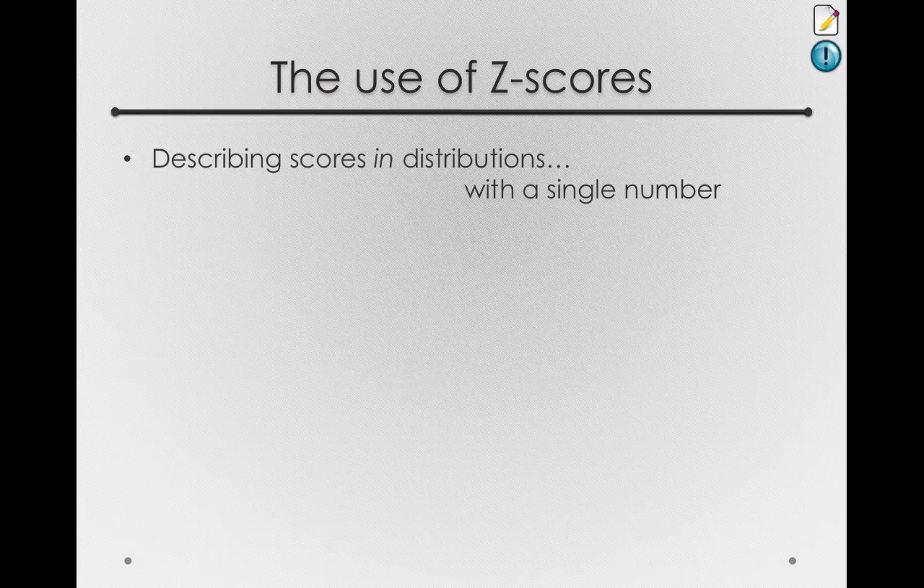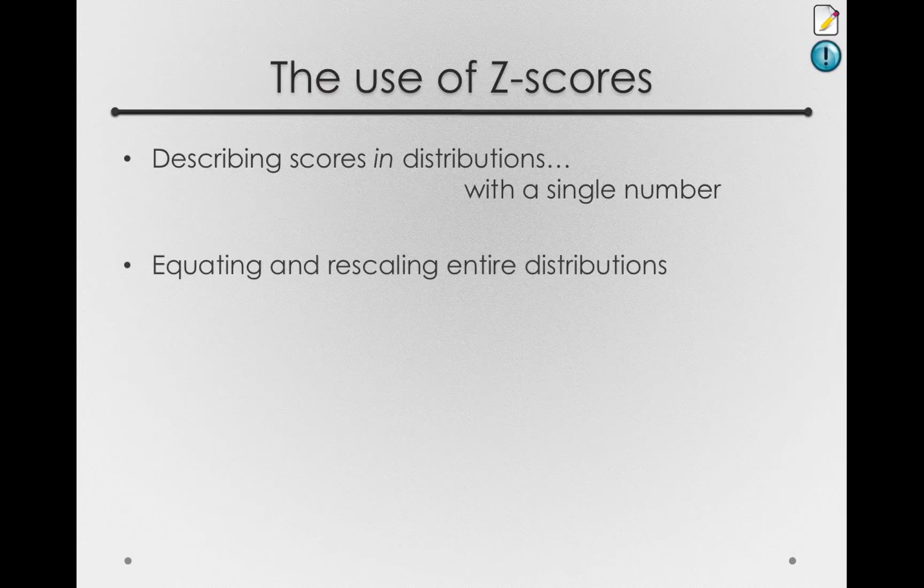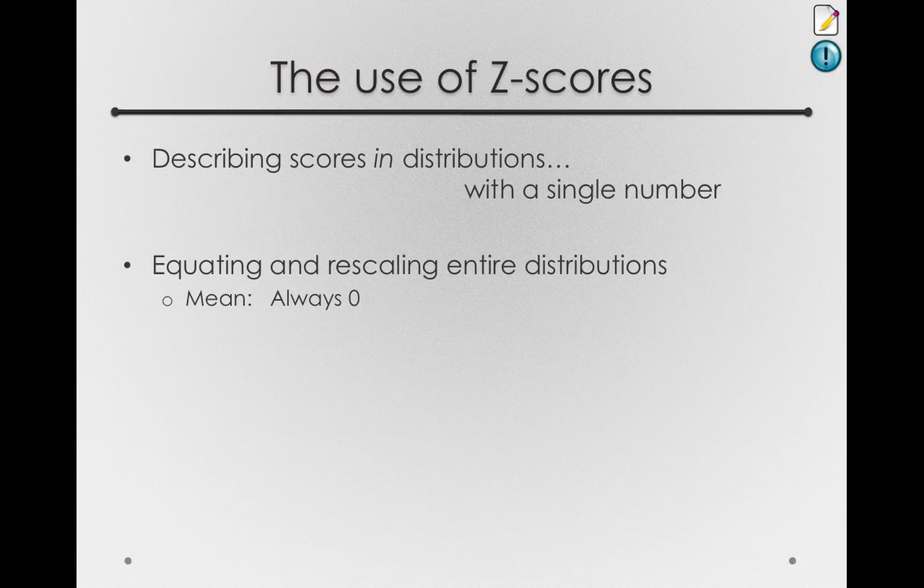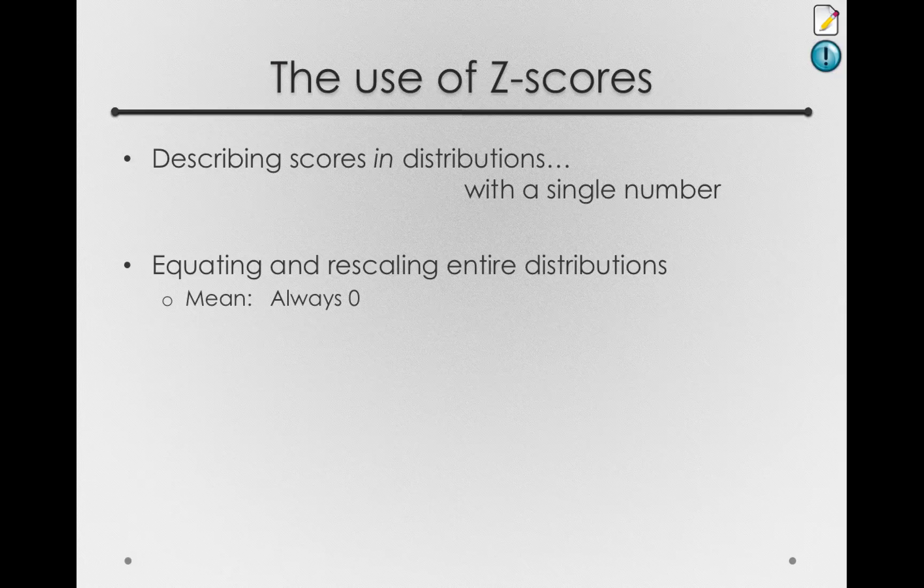Second, it allows us to equate and rescale an entire distribution, and this will yield important properties. If we z-score every individual in a distribution, the resulting distribution will have a mean of 0. This is always true. If you had a value at the center of the distribution, that is, you scored the mean, your z-score would have to be 0, because the numerator of the z-score formula is your deviation.